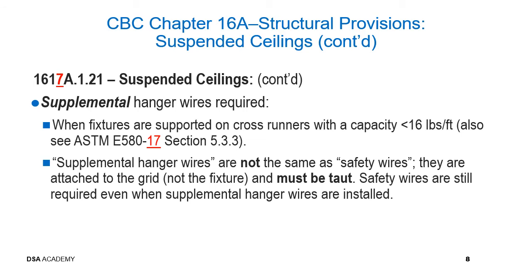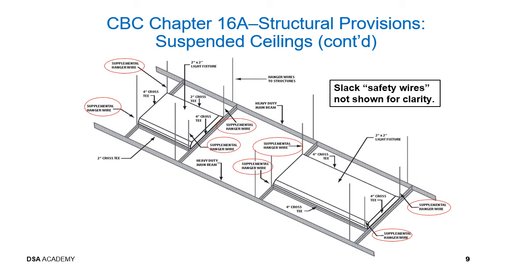When is supplemental hanger wire required? When fixtures are supported on cross runners with a capacity less than 16 pounds per linear foot. Supplemental hanger wires are not the same as safety wires — they are attached to the grid, not the fixture, and they must be taut. Safety wires are still required even when supplemental hanger wires are installed. This picture from ASTM E580 shows the supplemental hanger wires where light fixtures are supported on cross runners.